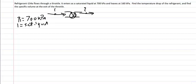At point 2, the pressure is 160 kPa. No other information is given at point 2. We're trying to find the temperature drop of the refrigerant, so the difference between inlet and exit temperature, and we're also trying to find the specific volume V2.